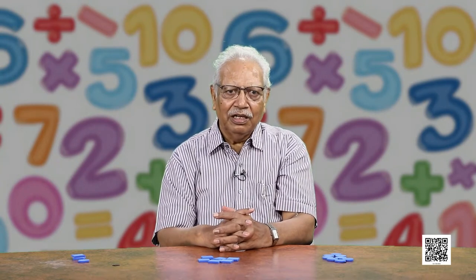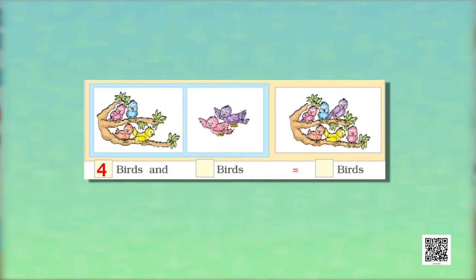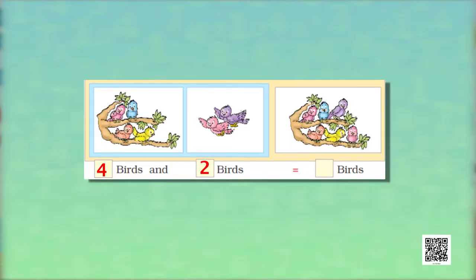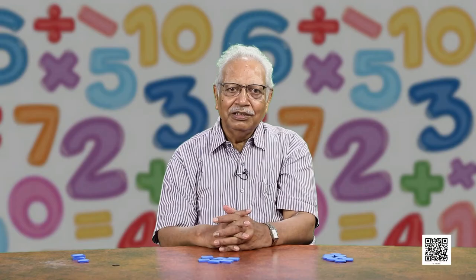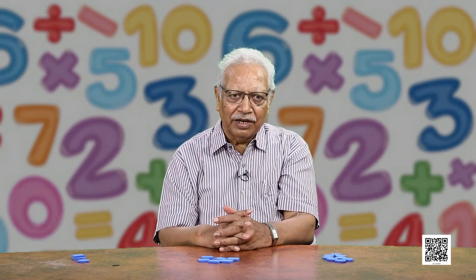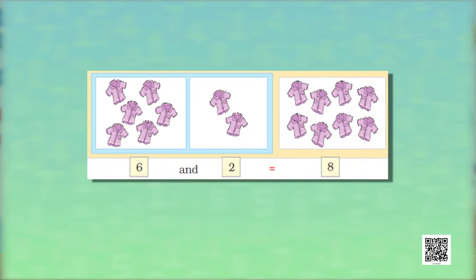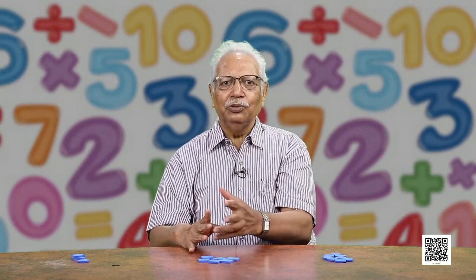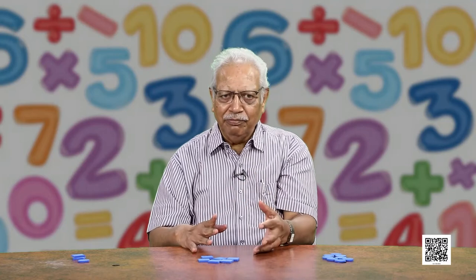Let us take another example of birds. These are 4 birds and 2 more birds fly in. They add up to 6 birds. Now we are using a sign of equality to show the addition. Similarly, these are 6 shirts and 2 shirts — we put them together and it becomes 1, 2, 3, 4, 5, 6, 7, 8. So we can say 6 and 2 are equal to 8. When we add them, it is equal to 8.